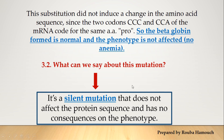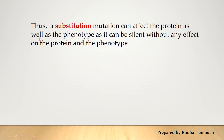When the substitution does not affect the protein sequence and has no consequences on the phenotype, we call it a silent substitution or silent mutation. When the replacement of one nucleotide by another doesn't affect the amino acid sequence and thus doesn't affect the phenotype, the mutation is called silent. So a substitution mutation is the replacement of one nucleotide by another: it can affect the protein sequence and the phenotype, or it can be silent, occurring without any effect on the protein and the phenotype.